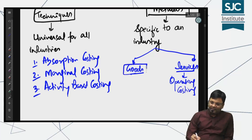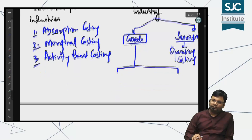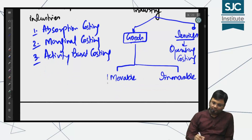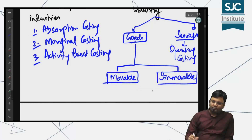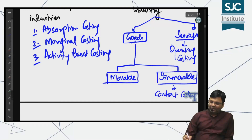और जो नाम goods के लिए है उसमें फिर दो पार्ट आते हैं — एक आता है movable और दूसरा आता है immovable। Immovable goods की industry में contract costing चलता है। यह सब chapter के नाम हैं आपके।